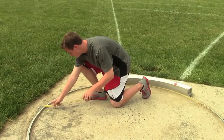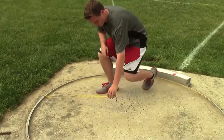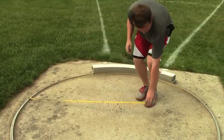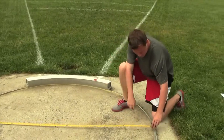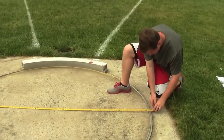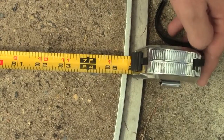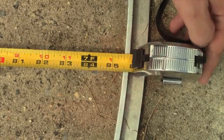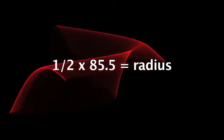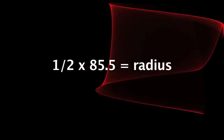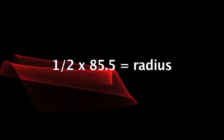First, measure the diameter. We now know the diameter measures 85.5 inches. Divide it in half and you have your radius. Now that you have the radius, plug it into the pi r squared formula, and it becomes pi times 42.75 inches squared.